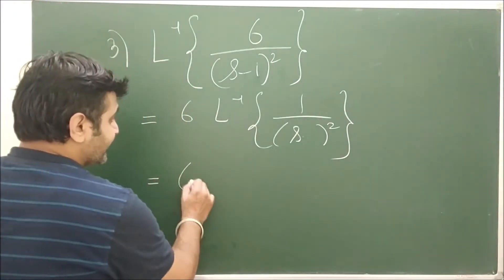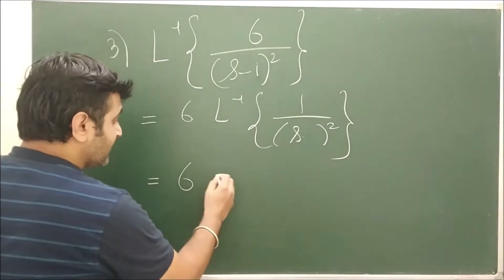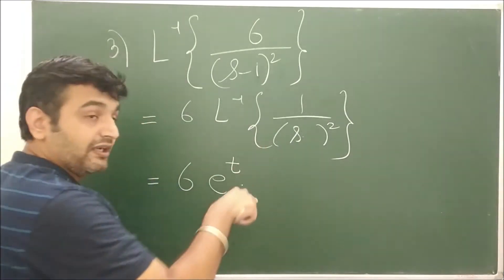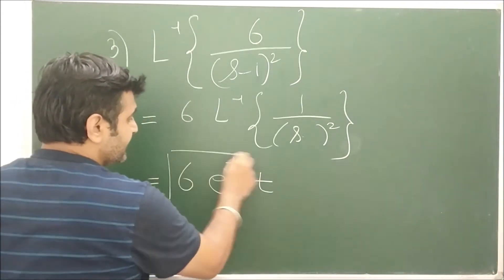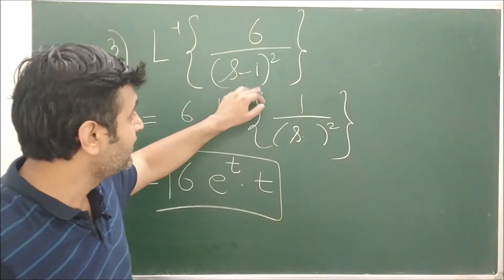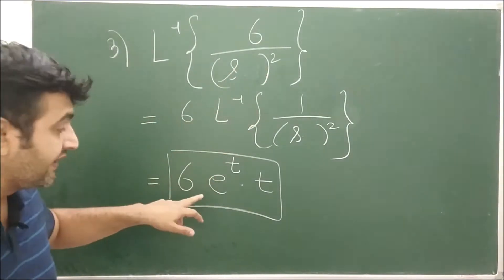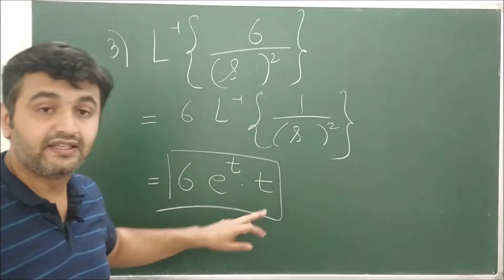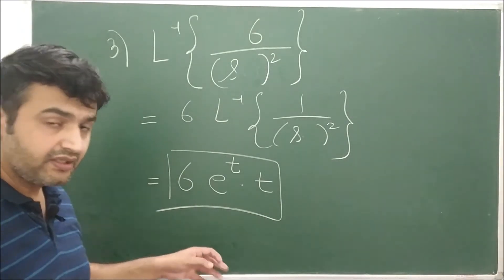So we know that we are shifting by a = 1, meaning we multiply by e^(at) = e^t. The Laplace inverse of 1/s² is t, so the answer is 6t · e^t. Whenever you see a shift in s, remove it — that accounts for the e^(at) factor — then find the Laplace inverse of what remains. It's that simple.